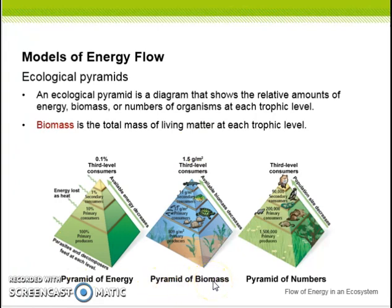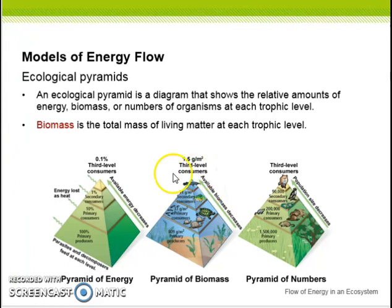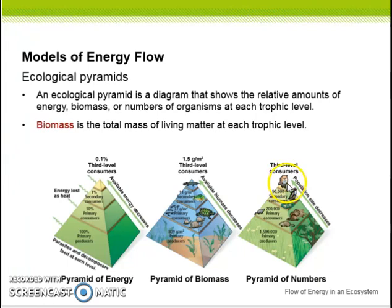Pyramid of Biomass — it's the same thing, but what I want you to know is that it decreases as it goes up, same as the energy pyramid. Just make a note next to your pyramid: populations decrease as they move up the pyramid. In the ocean, the top predator would be the shark, and on land, it would be humans.